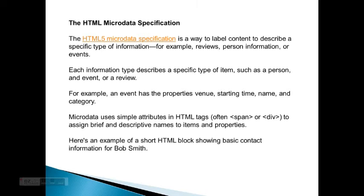The HTML microdata spec is a way to label content to describe a specific type of information — for example, reviews, personal information, or events. Each information type describes a specific type of item such as a person, an event, or a review. For example, an event has properties: venue, starting time, name, and category. Microdata uses central attributes in HTML tags, often span or div, to assign brief and descriptive names to items and properties.